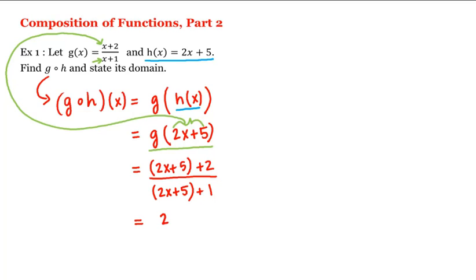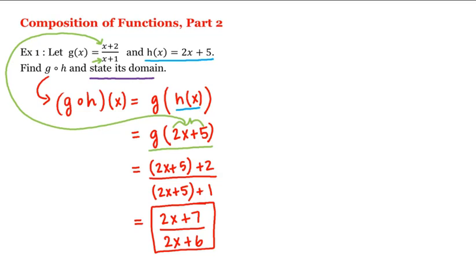That simplifies to 2x plus 7 divided by 2x plus 6, which is our composition. Now we're also asked to state its domain. Looking at this final form, the only issue would be if x were equal to negative 3, because then we'd be dividing by 0. So we need to exclude x equal to negative 3 from the domain.